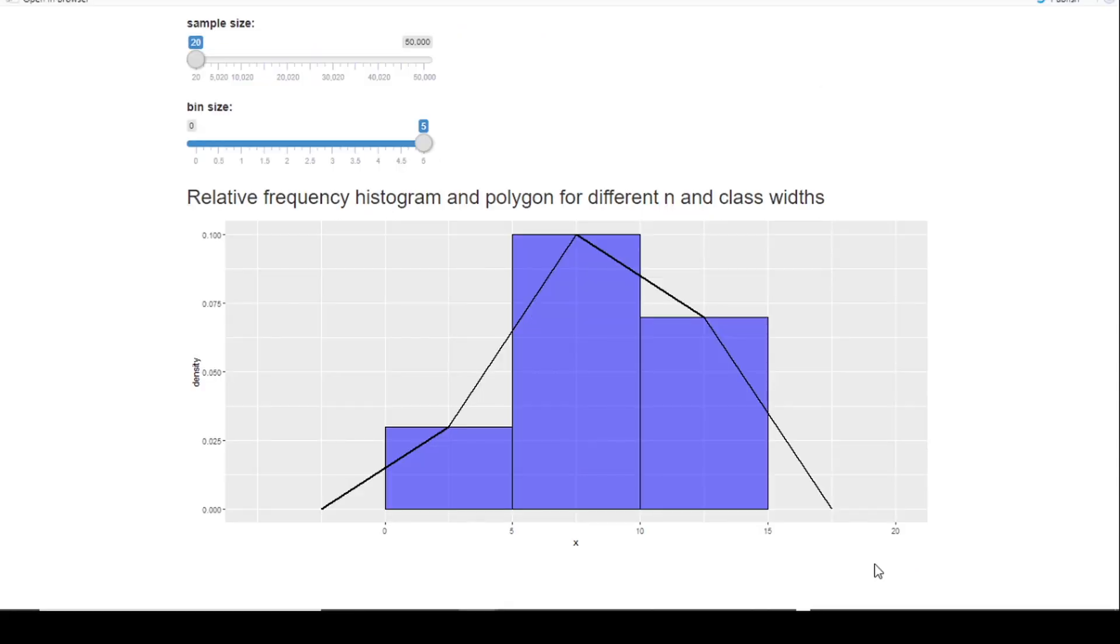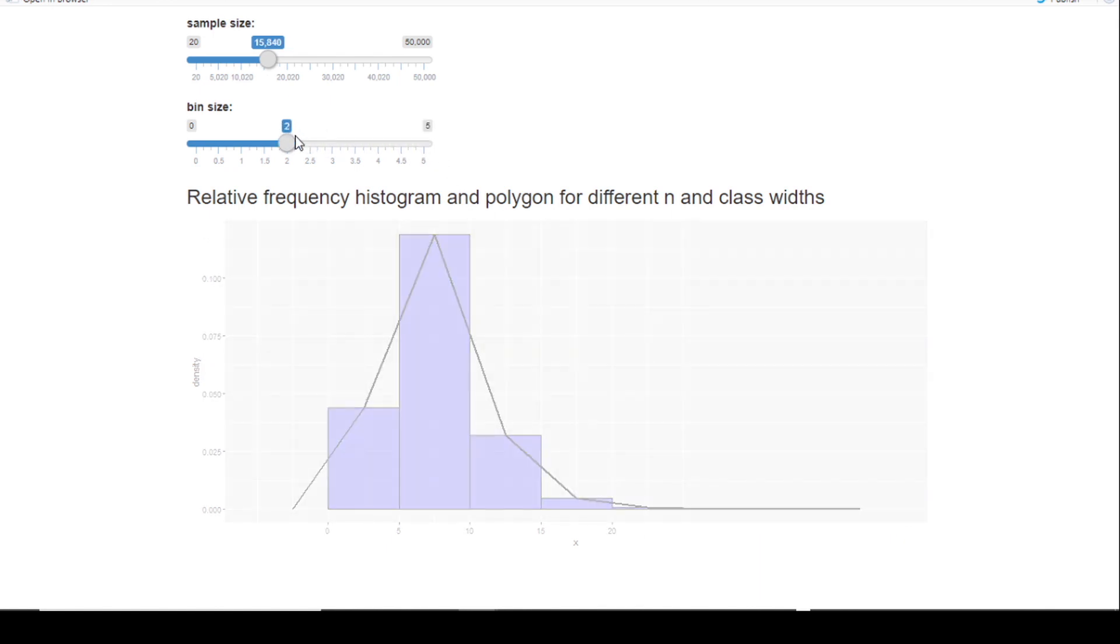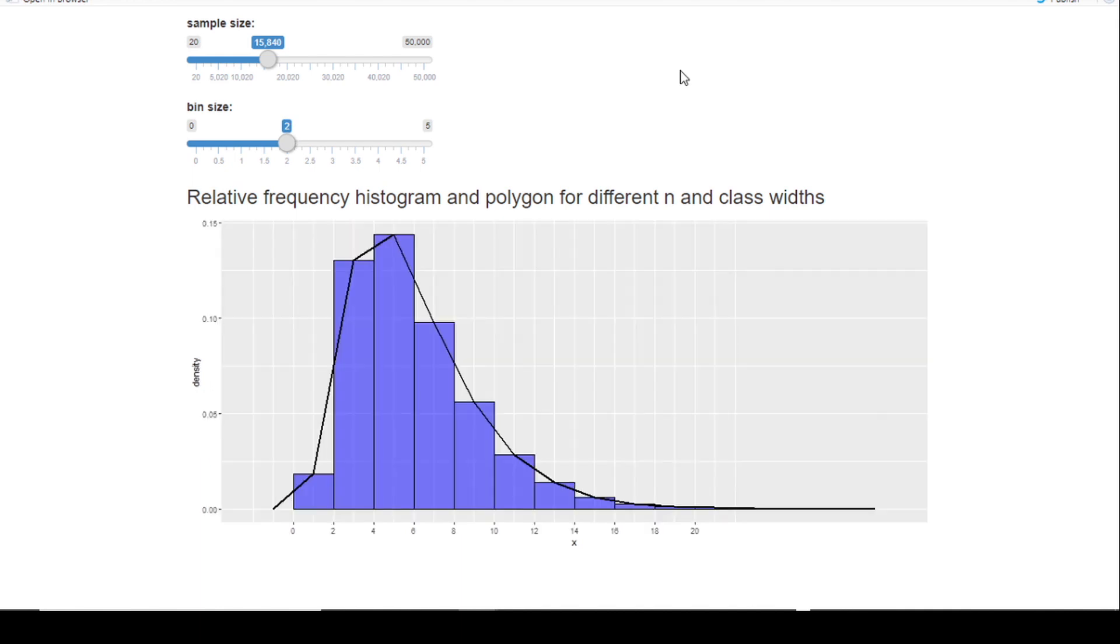On this slide, I have a similar situation where my sample size is 20 and my bin size is 5. So what happens if I decrease my bin size and at the same time increase my sample size? Okay, so for a bigger N and a smaller bin size, we can see that the polygon starts to approach a smooth curve.